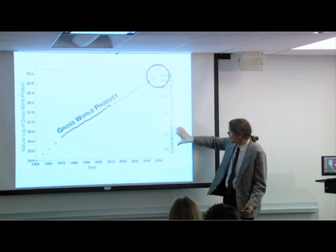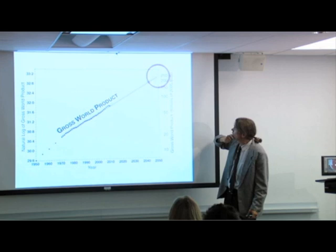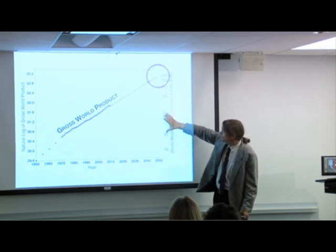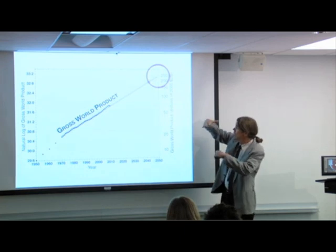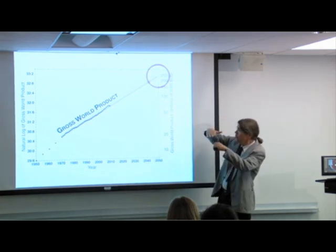On the right are the actual trillions of 2005 U.S. dollars. And you see, because it's a log graph, the numbers are not even, but you have larger jumps as you get closer together.